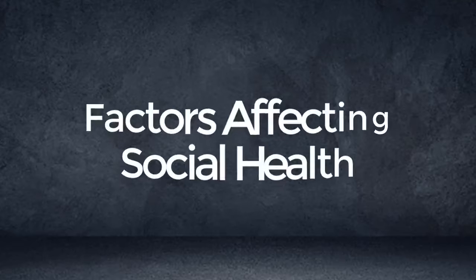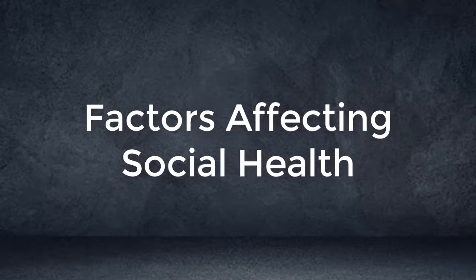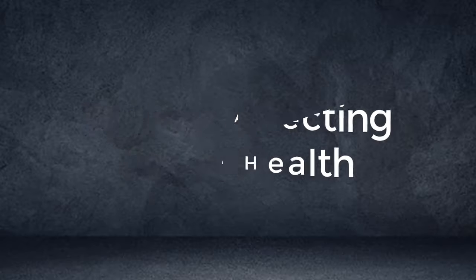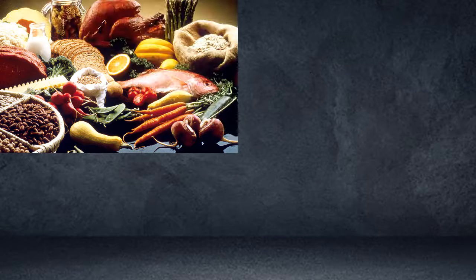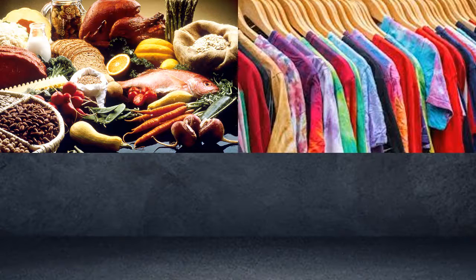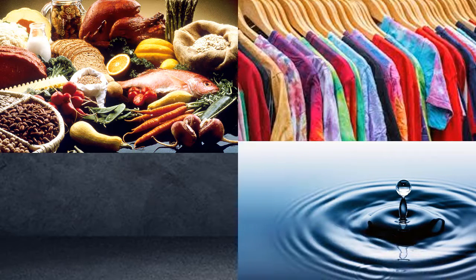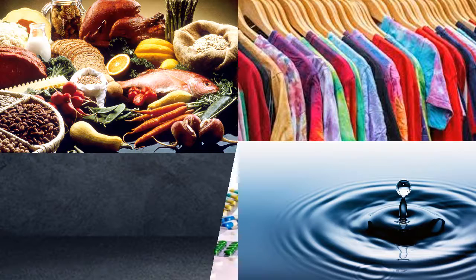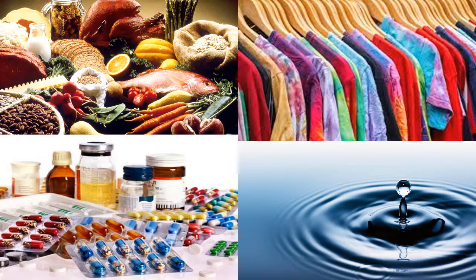Now, what are the various factors affecting social health? The first one is food, clothing, shelter, water, and medicine. These are the basic needs of man.